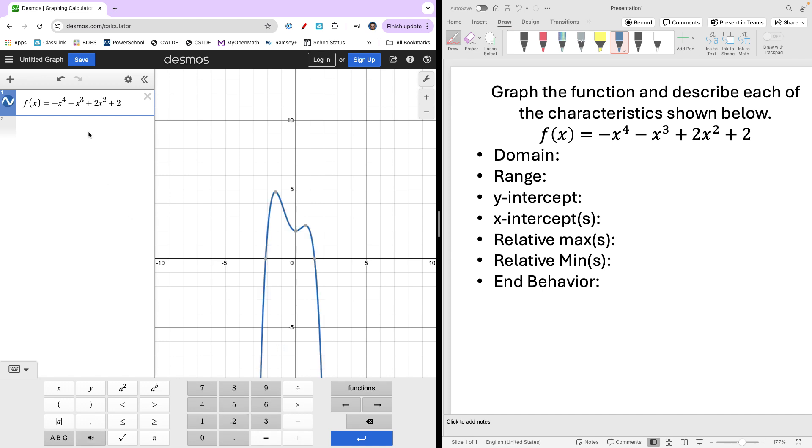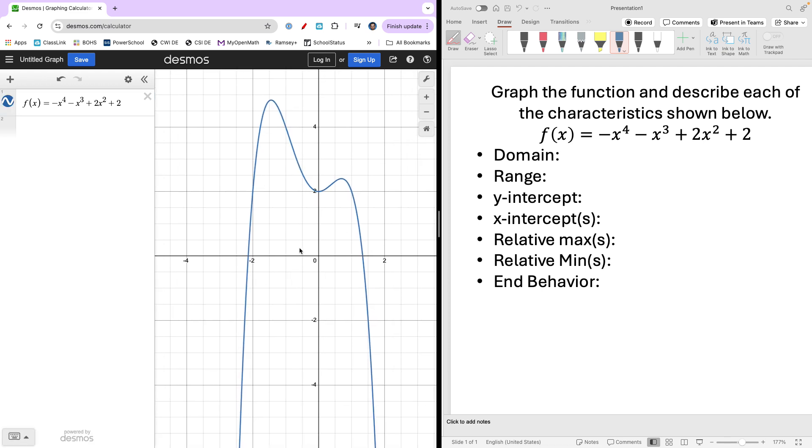Double check: negative x to the fourth. Okay, I think we've got that. Now here's our graph. Let me maybe just make it a little bit bigger there.